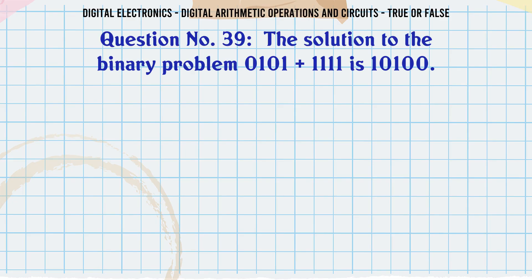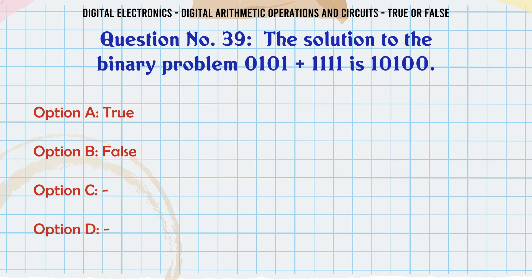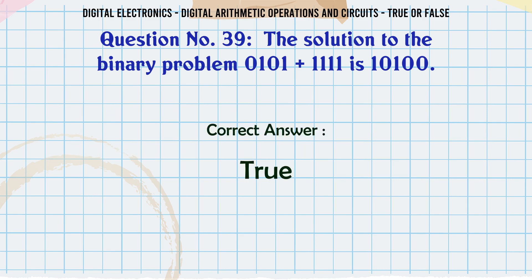The solution to the binary problem 0101 + 1111 is 10100. True or False? The correct answer is True.